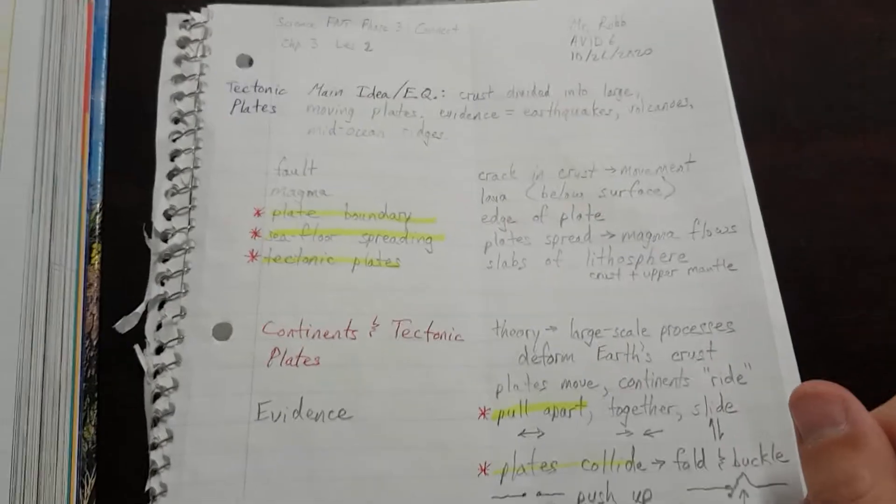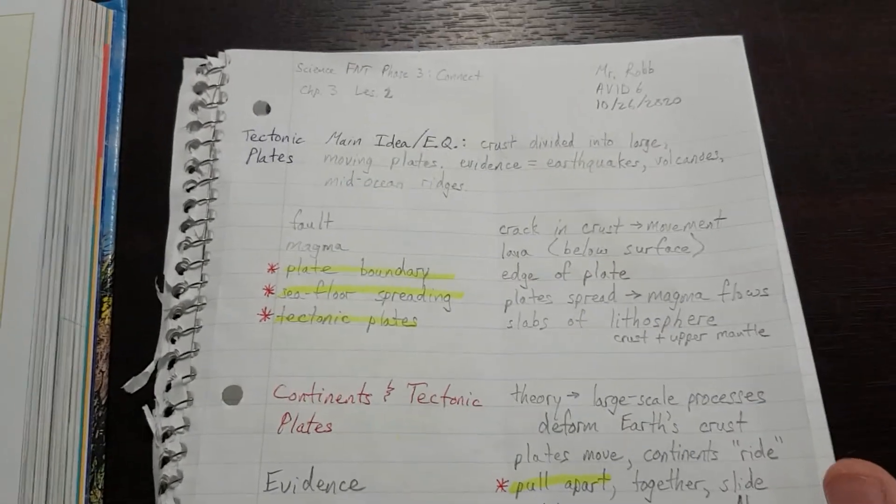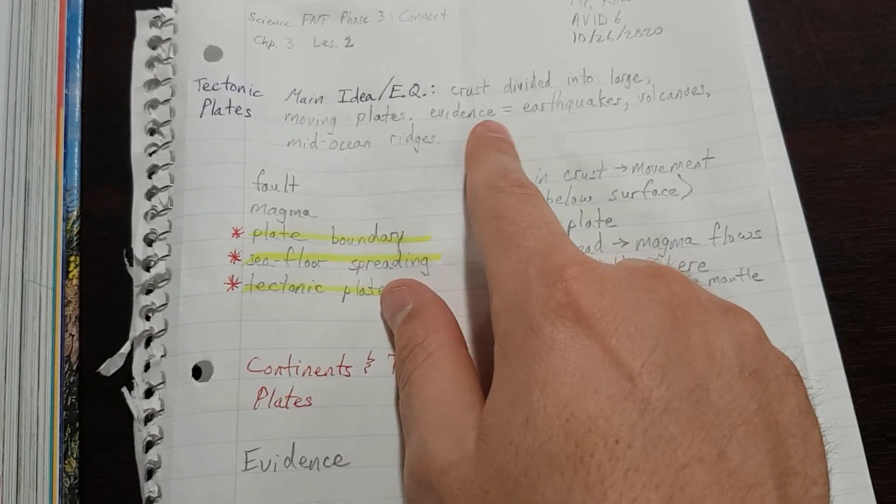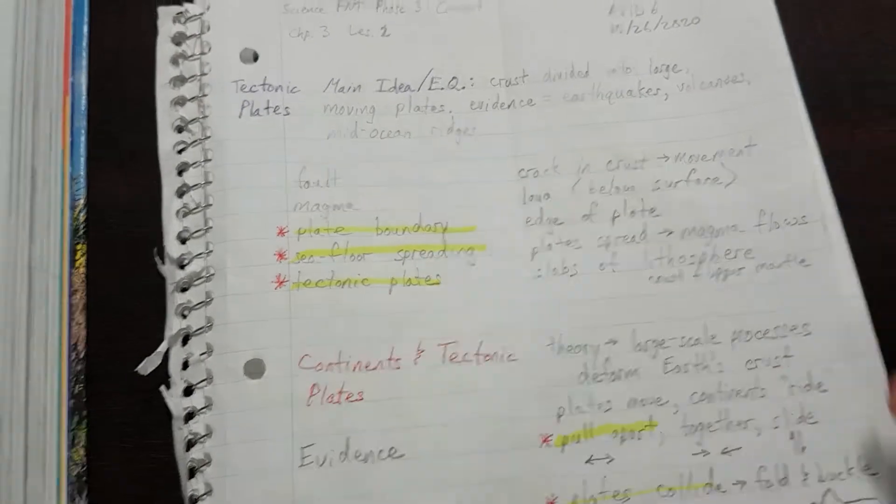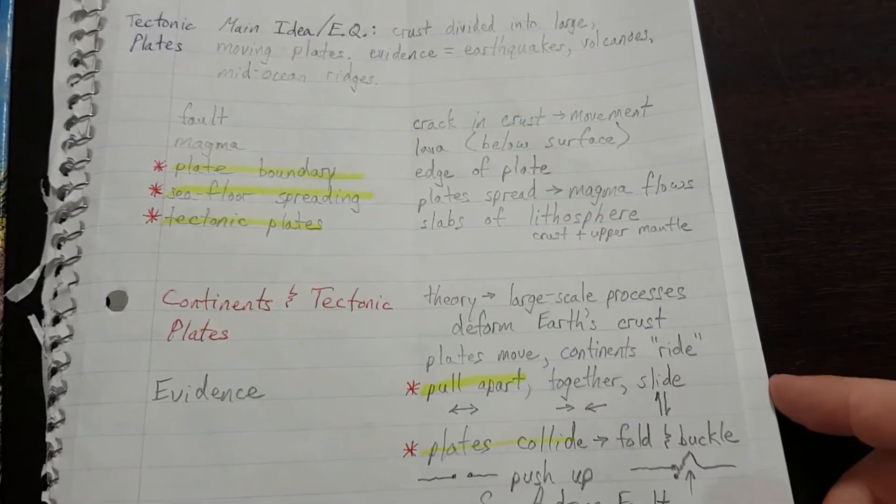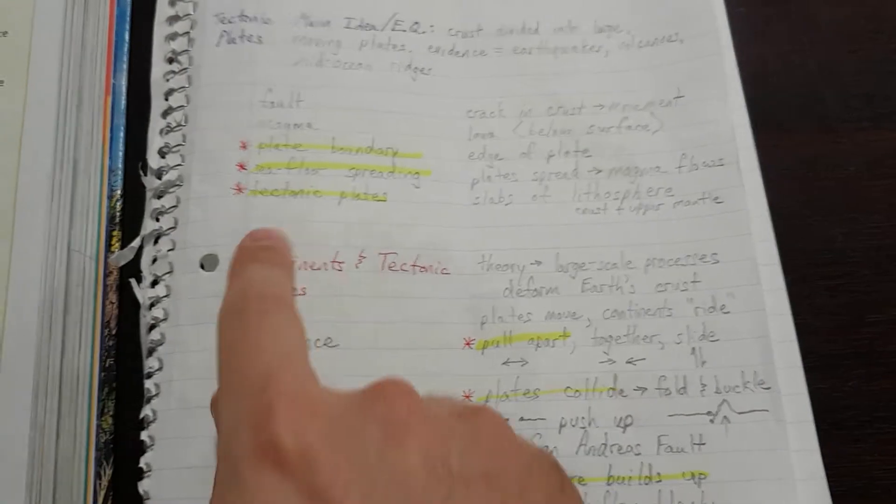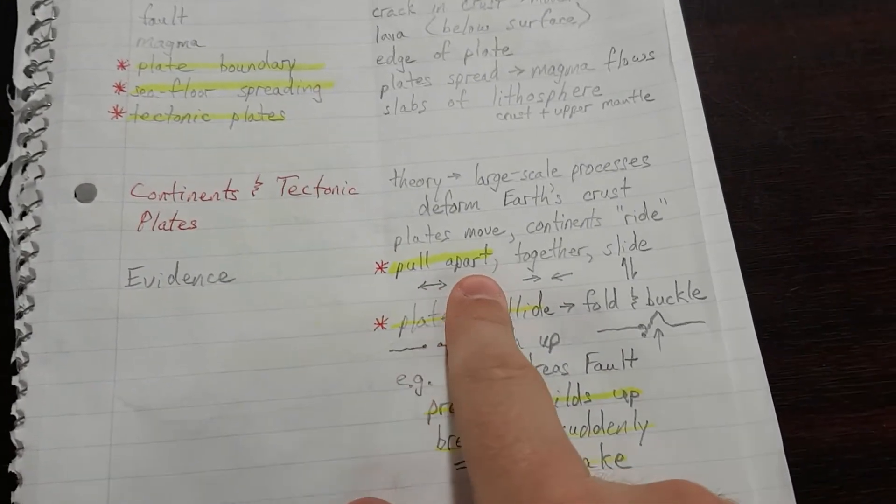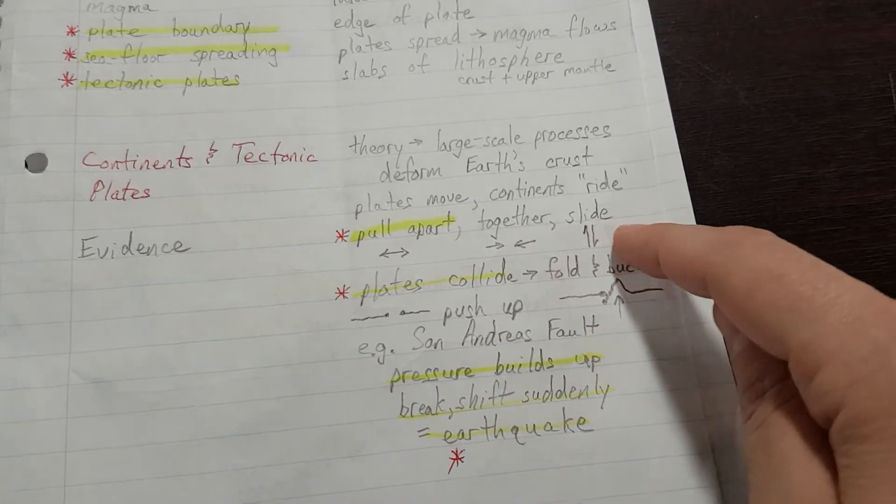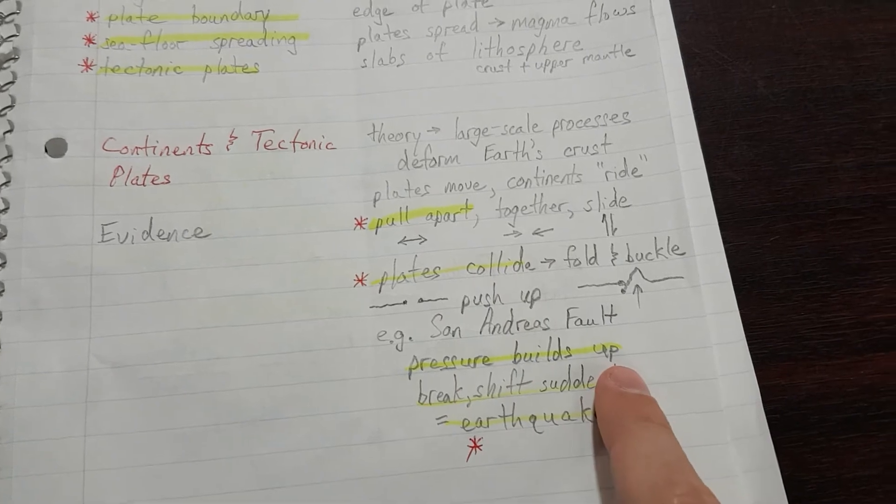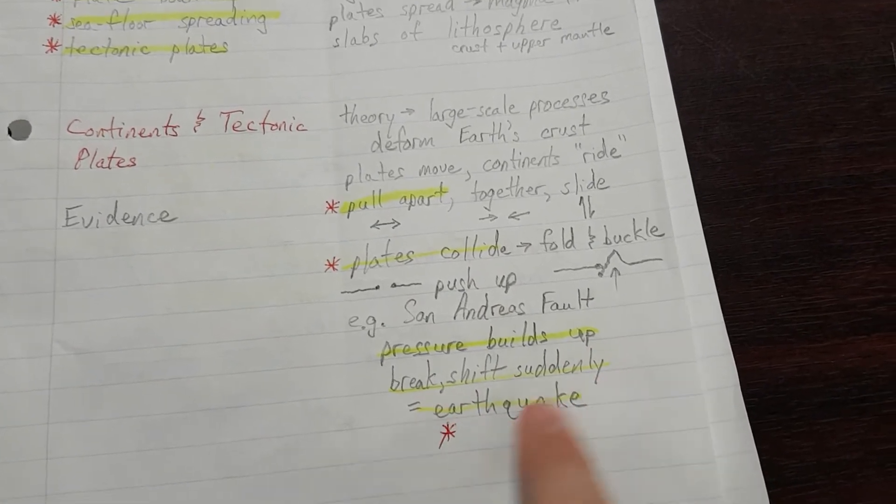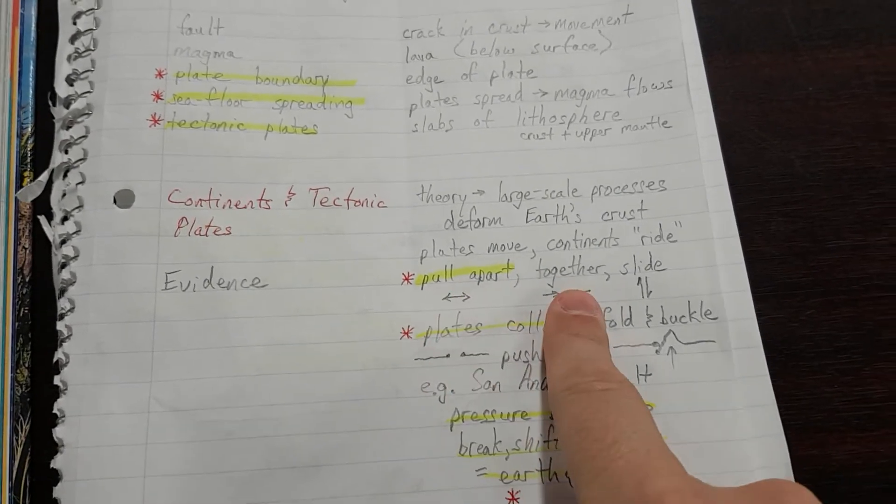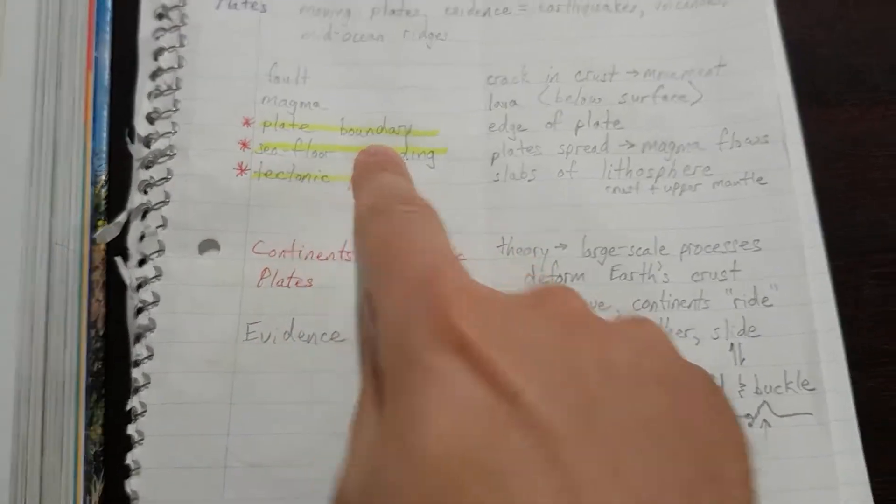All right, so let's imagine what would we say. We would say something like, the crust is divided into large moving plates. There's evidence for this, including earthquakes, volcanoes, and mid-ocean ridges. For example, we know that there are tectonic plates that pull apart, move together, or slide past one another. We know the plates collide and build up pressure. When they break or shift, suddenly that causes earthquakes, and they're pulling apart, pushing together, sliding past each other at a plate boundary.